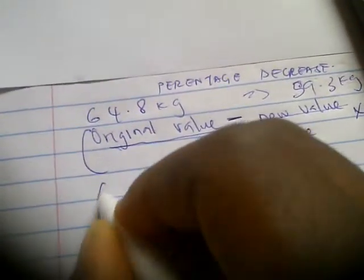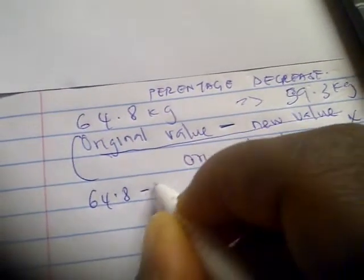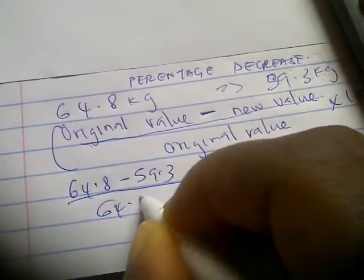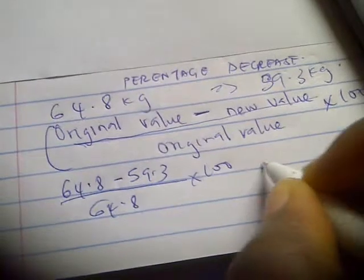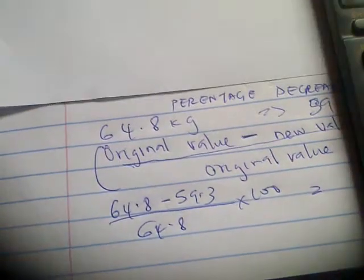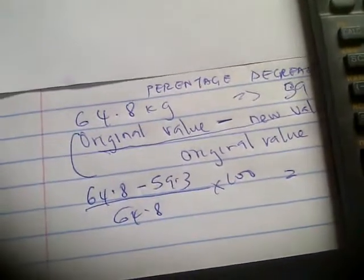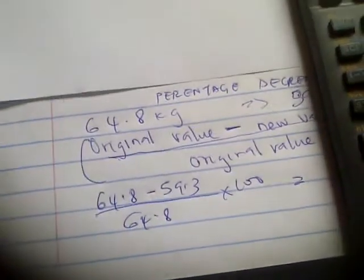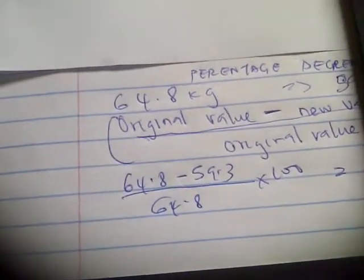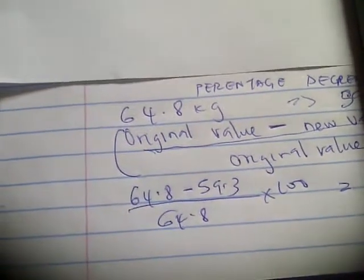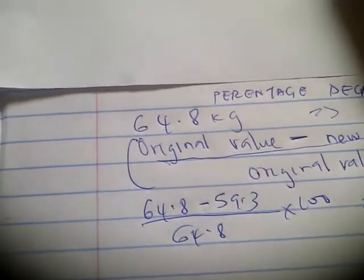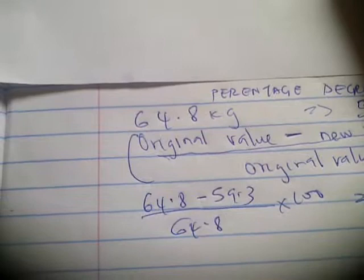We have 64.8 minus 59.3 divided by 64.8 times 100, and it's going to give you 8.48%.